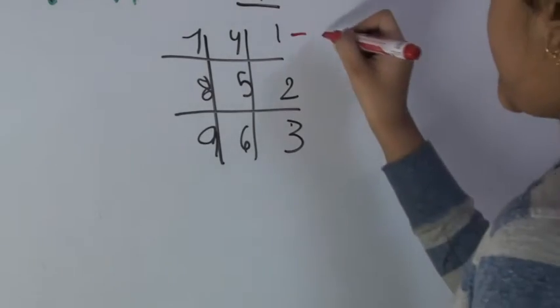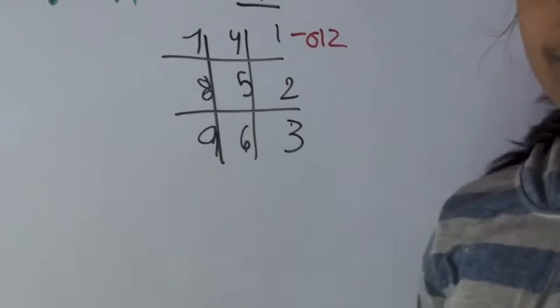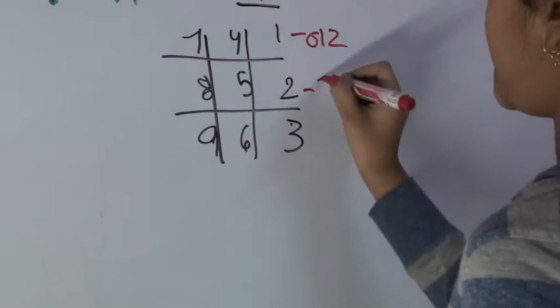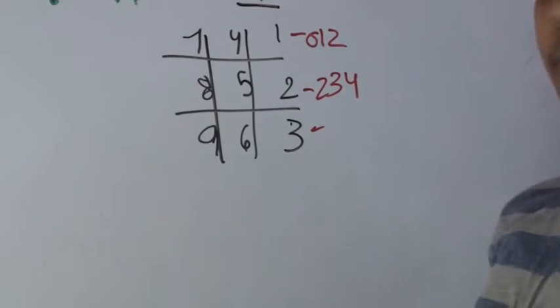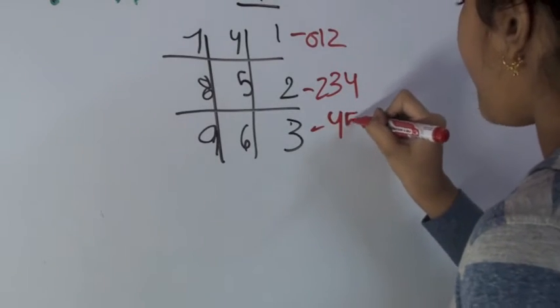This column is called zero, one, two. This one is called two, three, and four. This one is called four, five, and six.